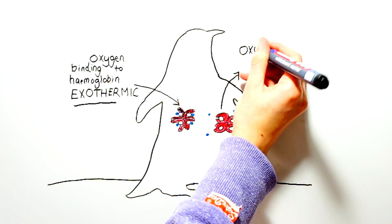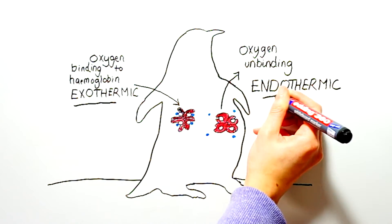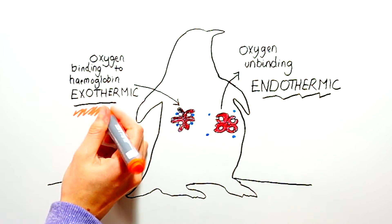Furthermore, the unbinding or heat-requiring reaction is inhibited by very cold temperatures. So in cold places such as the feet, the unbinding reaction will not occur very often at all. This means that very little heat is lost from their feet.